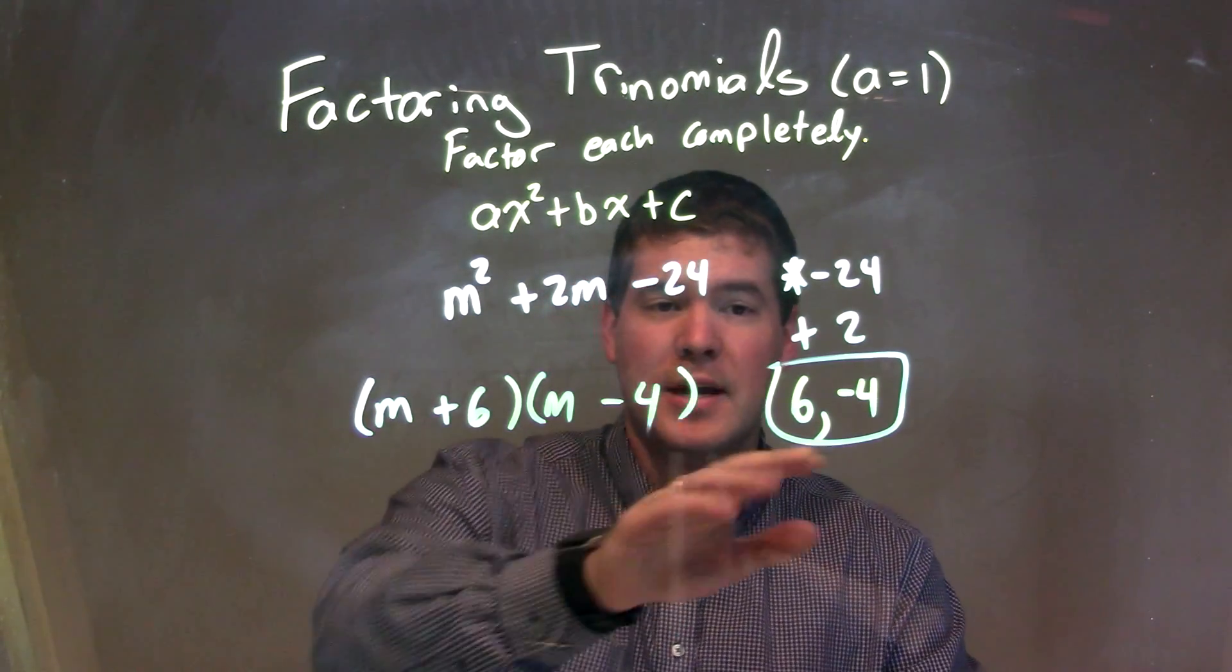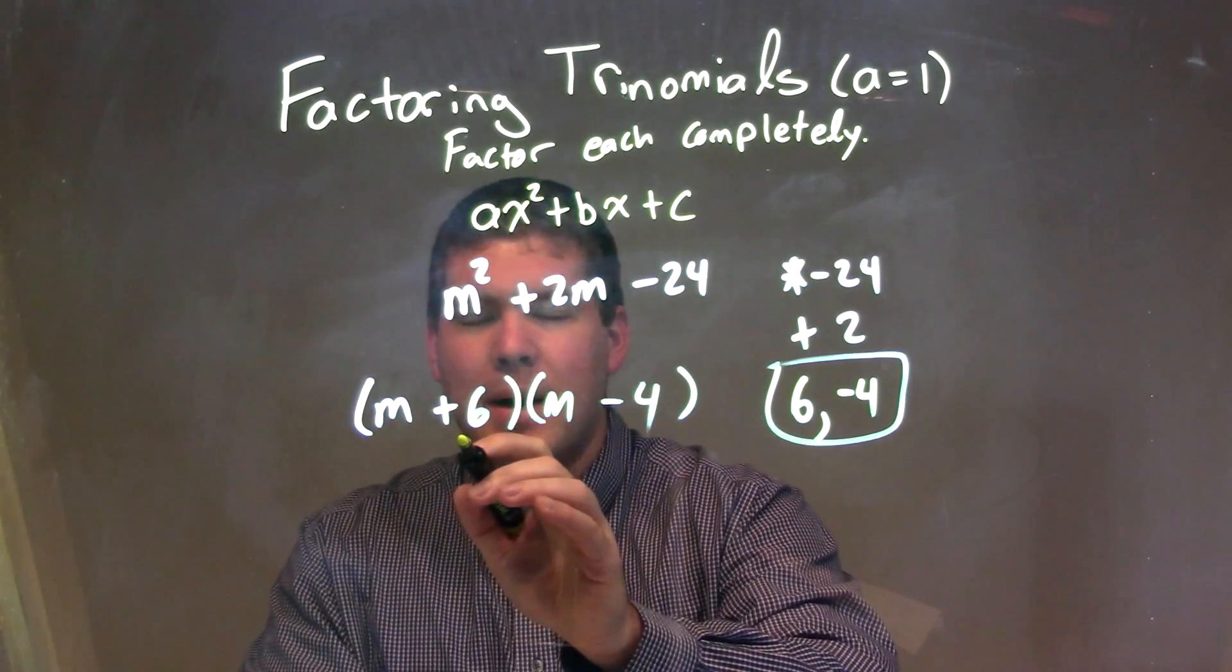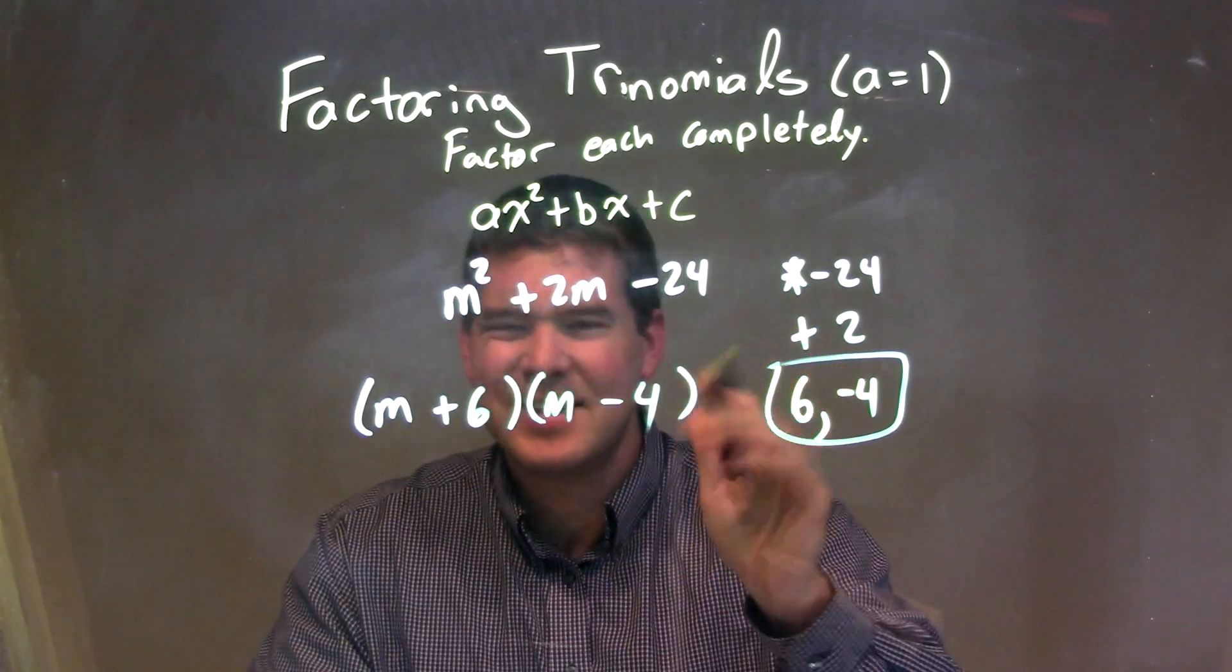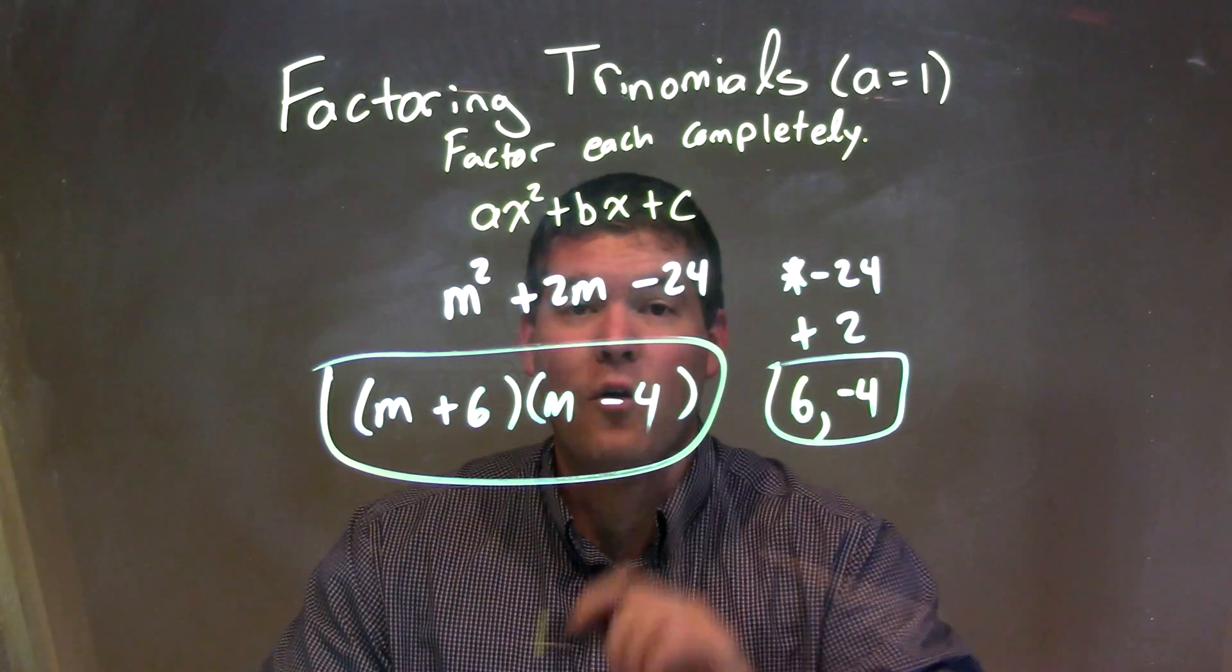Our final answer here, taking those two numbers, putting them in each parentheses. It really doesn't matter the order if it's m minus 4 or m plus 6, that's fine. But our final answer here is just m plus 6 times m minus 4.